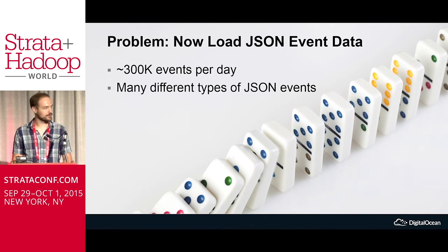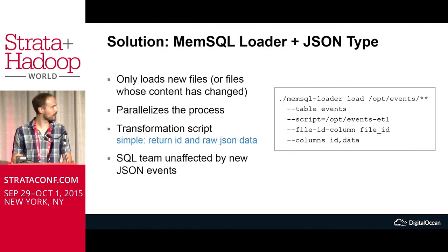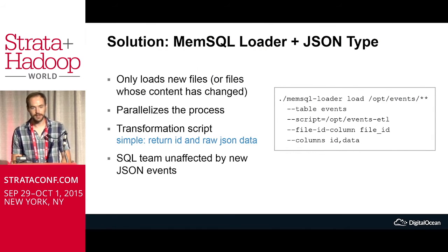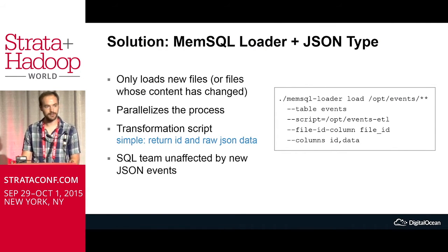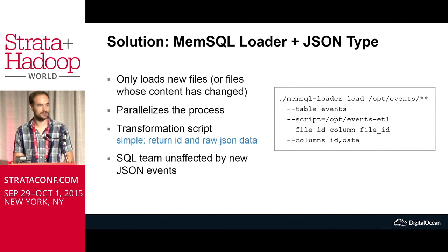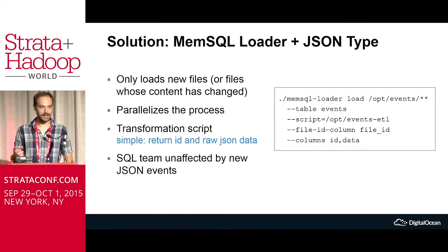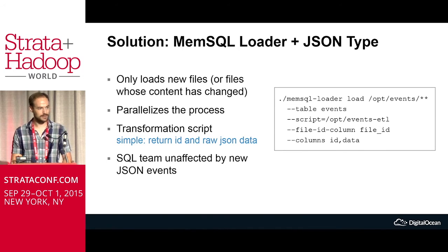We have these in flat file systems, so the next question is how do we get that into MemSQL? What we used is MemSQL loader. You can point it at a file path or a file glob and say, import all of these files into MemSQL. It will parallelize the process. It will look at the file name, look at the file hash, and skip the file if it has already been imported.